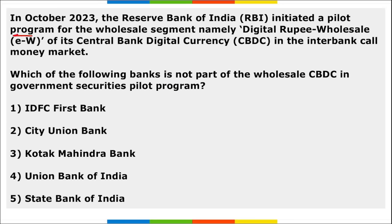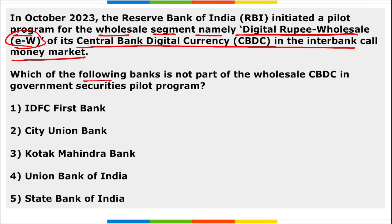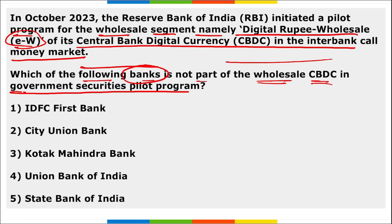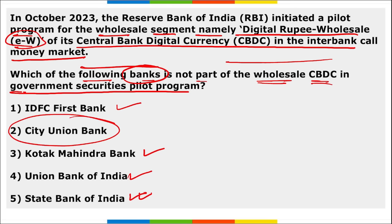Next, RBI initiated a pilot program for the wholesale segment — digital rupee wholesale (e₹-W) — its central bank digital currency in the interbank call money market. The question asks which bank is NOT a part of the wholesale CBDC government securities pilot program. IDFC Bank, Kotak Mahindra Bank, Union Bank of India, and State Bank of India are part of it, but City Union Bank is NOT part of this particular government securities pilot program.